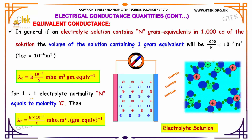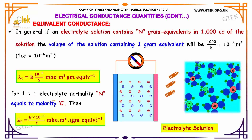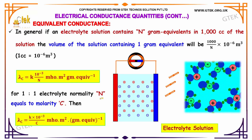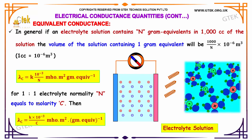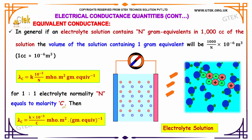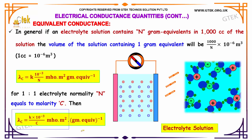For a 1:1 electrolyte, normality n equals molarity c. Then lambda_c equals k × 10⁻³ divided by c, with units of siemens·meter²·gram-equivalent⁻¹.